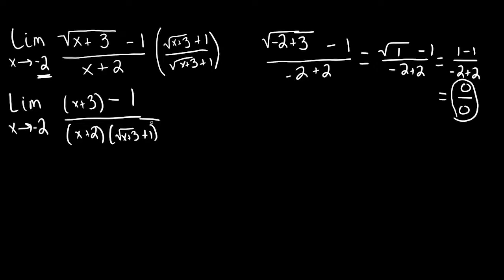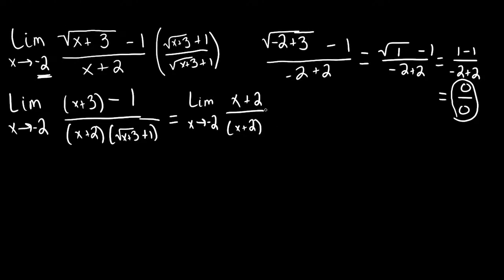Now let's combine the numerator a little bit and see what happens. We're going to get the limit as x approaches negative 2 of x plus 2 in the numerator, because 3 minus 1 is 2. Then we have x plus 2 in the denominator, and the square root of x plus 3 plus 1 remaining.